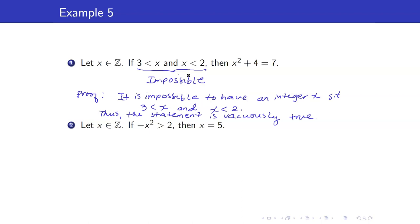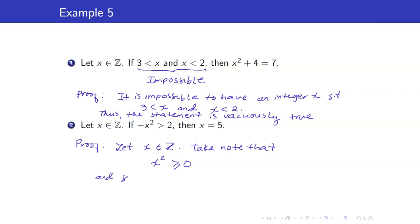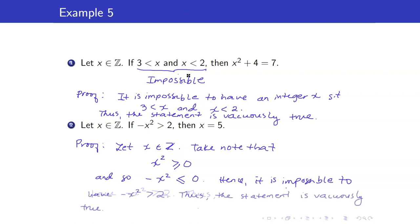Next example: let x be an integer; if −x² > 2, then x = 5. We note that x² ≥ 0 for any integer, so −x² ≤ 0. Hence it is impossible to have −x² > 2. Therefore the statement is vacuously true.